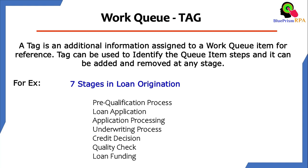Then Underwriting Process Stage, Credit Decision Stage, Quality Check, and finally Loan Funding. So these are the stages we have in the Loan Origination process.